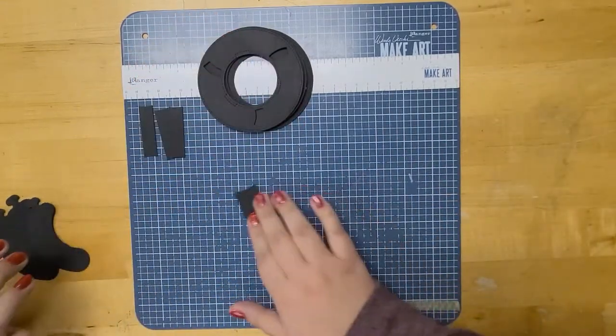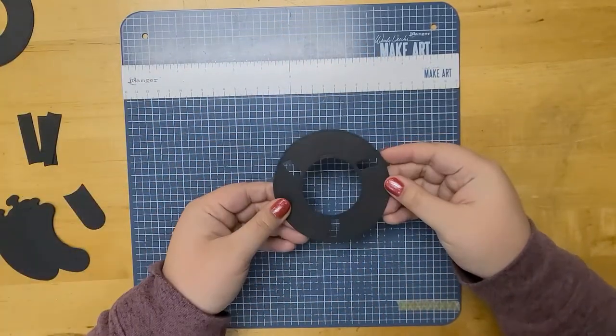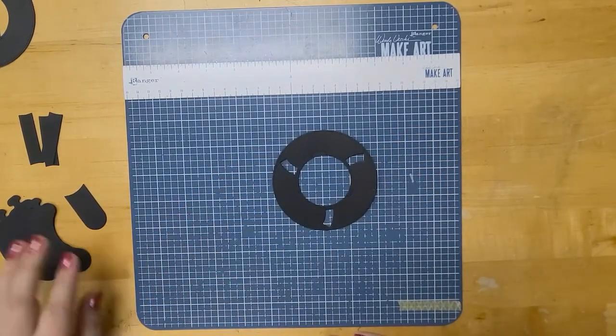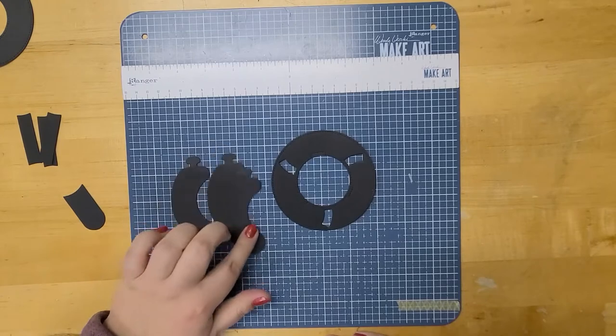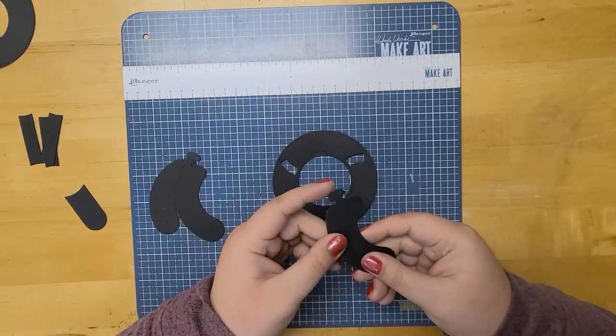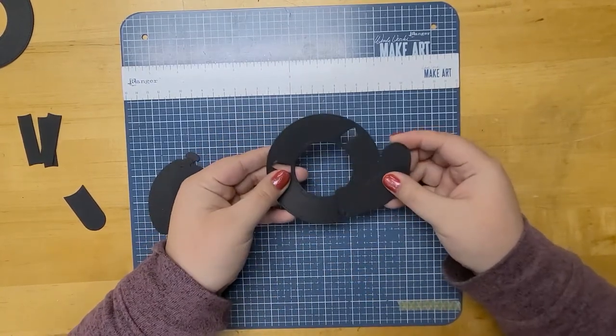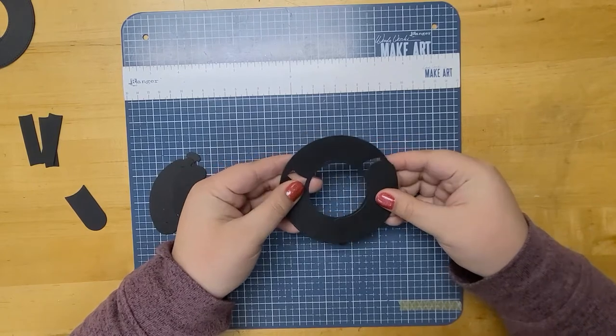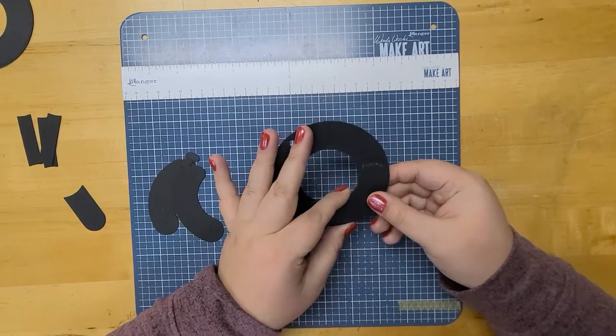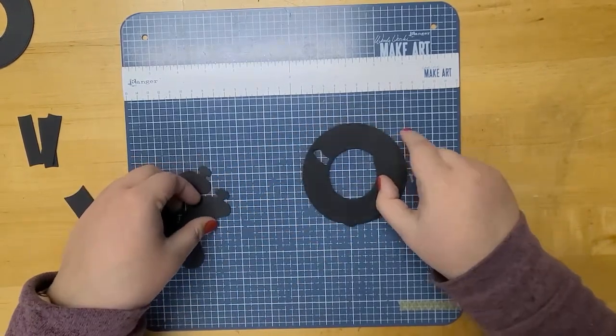The first thing we're going to do is take our ring that has the three slots cut into it, and we're also going to need our three sausages. What you're going to do is hook this little tab right into this slot like that and push it to the edge. And that sausage curve should line right up with that ring there. And we're going to do this for all three.